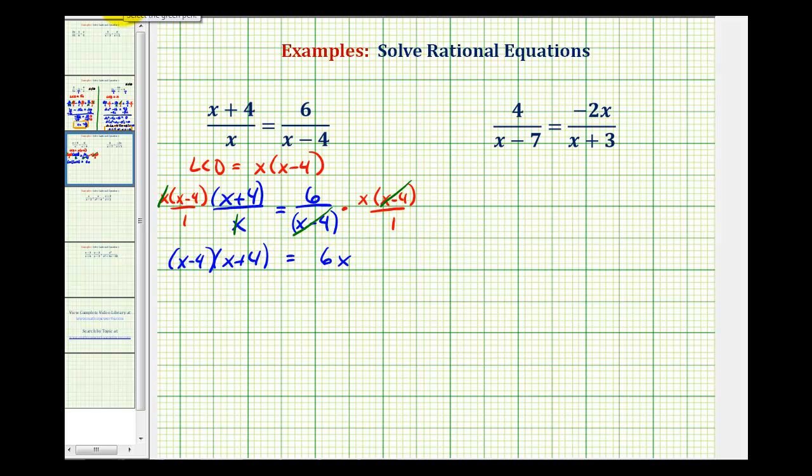Again, notice how this result would be the same as cross multiplying here and here. Now we'll eliminate the parenthesis and solve for x. So we'll have x squared plus 4x minus 4x, that's zero, minus 16 equals 6x.